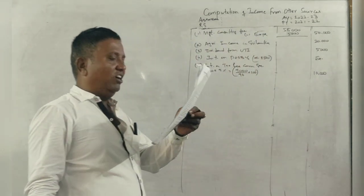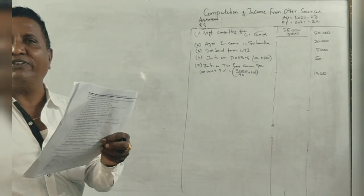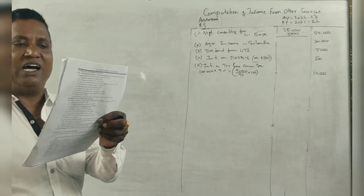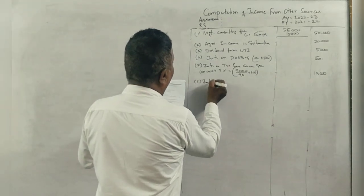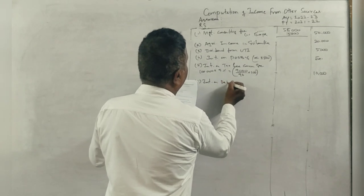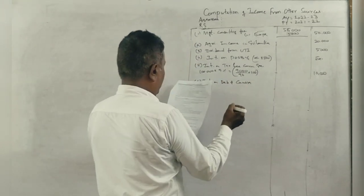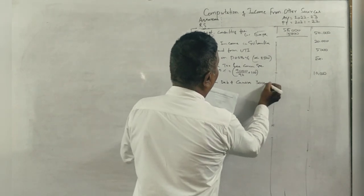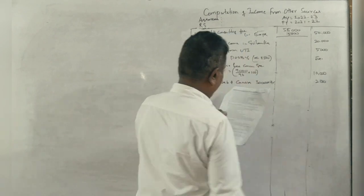What is it? Next, Rs. 30,000, 7% debentures of Canada Mills. Is this tax-free? No. Amount into percentage equals tax. Interest on debentures of Canada Mills: Rs. 30,000 into 7% is Rs. 2,100. Next.